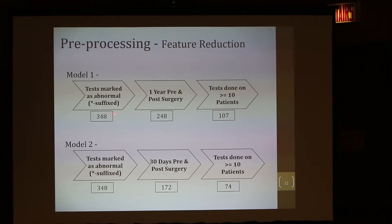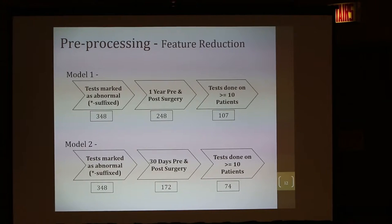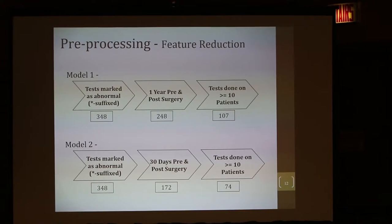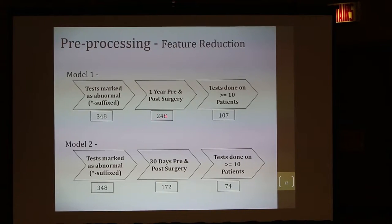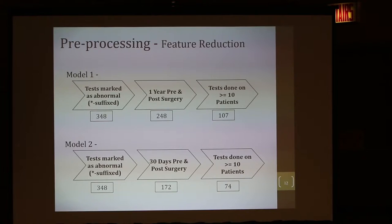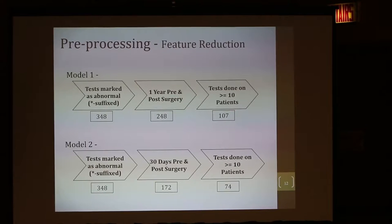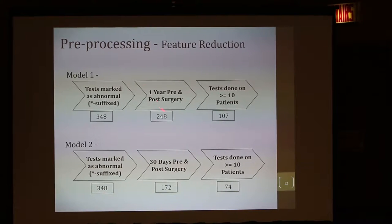That reduced the tests to 348. The distribution of tests ranged from five years pre to five years post surgery. Since we were looking at surgical site infections, anything around one year or even six months would be appropriate — for example, hemoglobin A1C would be three to six months. We first looked at just one year pre and one year post, which reduced the tests to about 248. Then we required a minimum of about 10 patients per test, otherwise it wouldn't be statistically significant even for imputation purposes. That brought us down to about 107 tests in the one-year group.